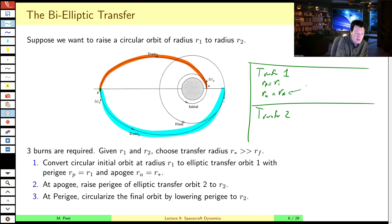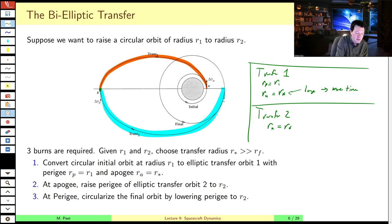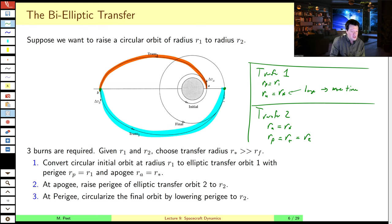The second transfer orbit starts from the apoaps because you're going to raise the periaps. So the apoaps of the second transfer is that same R-star. Unlike the Hohmann transfer, we're not going to periaps — we start at apoaps at R-star, which is farther than the target radius. When we come back, we want to be in our target orbit, so the periaps of our second transfer is the target radius Rt, also called R2.